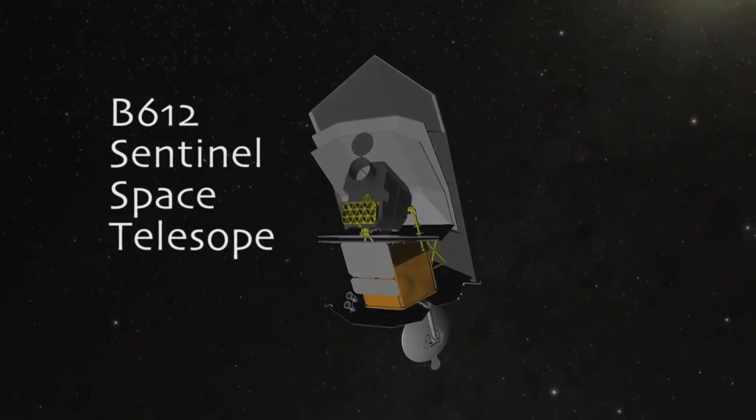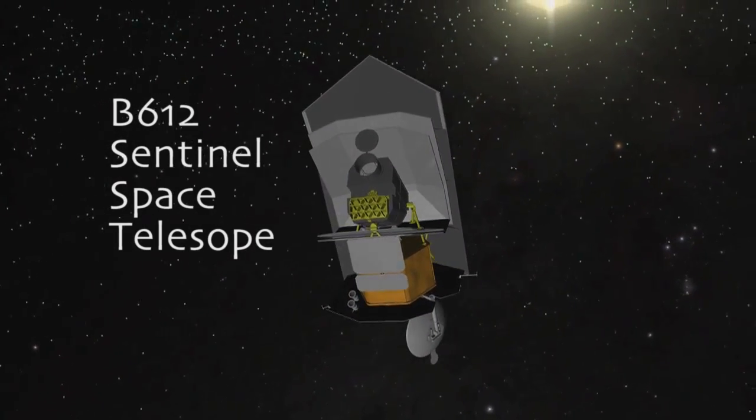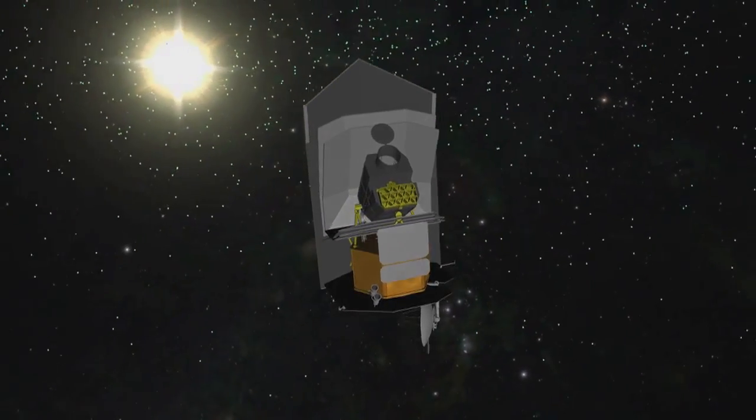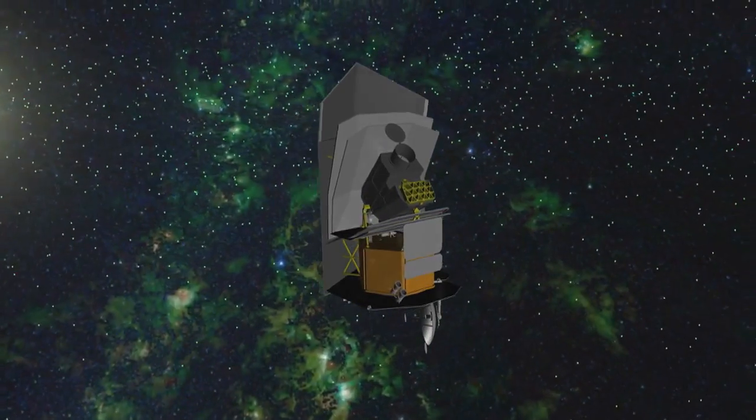And as to where you want to put it, you want to be somewhere where you can see Earth's orbit with your back to the sun, and therefore we're putting it in an orbit around the sun very similar to the orbit of the planet Venus.